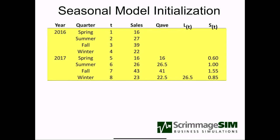With two years worth of data, we're going to determine the underlying level and also the seasonal factors. The first thing we do is average the same quarter. So we're going to take spring 2016 along with spring 2017, average them together, and get our first quarterly average. Spring of 2016 we had sales of 16, spring of 2017 the same number — averaged together we get 16. Summer, we have 27 and 26 in 2016 and 2017, averaged together we get 26.5. Fall, we had 39 and 43, averaged together we get 41.